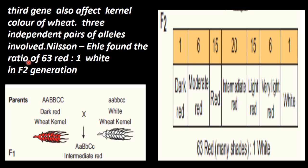Nizan and Eli found that the ratio is 63 red and one white. When white and red are crossed, we get 63 red and one white in the F2 generation.